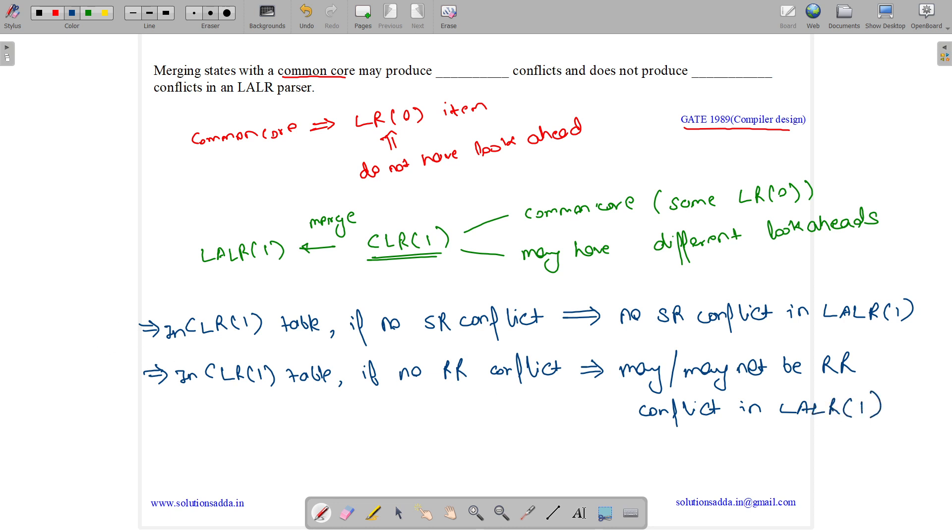You need to remember these two statements. If there is no SR conflict in CLR1, then there will be no SR conflict in LALR1. If there is no RR conflict in CLR1, then there may or may not be RR conflict in LALR1.